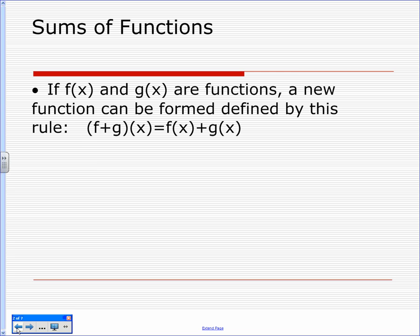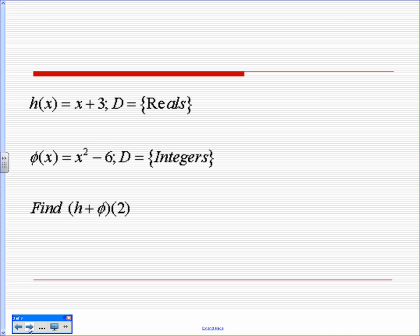It's just saying you can add them separately or you can add them together and then plug in your value. We're going to look at it, do it two different ways. We've got h of x equals x plus 3. Omega of x equals x squared minus 6. Find h plus omega of 2.